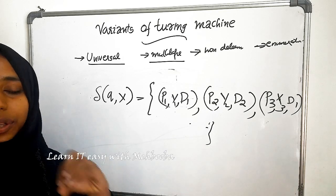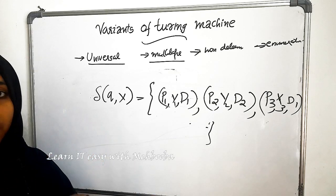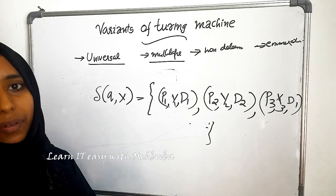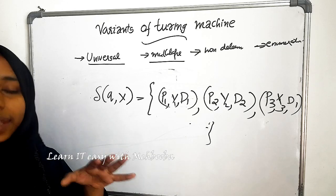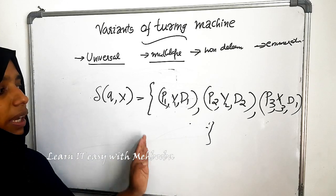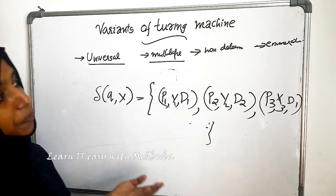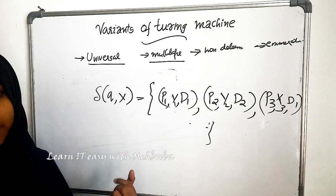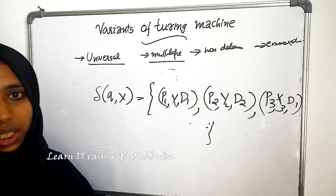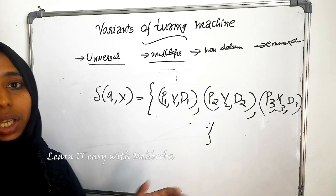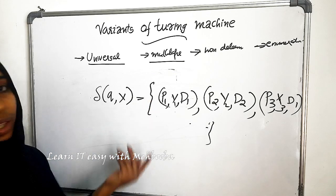Non-deterministic Turing machines and deterministic Turing machines have the same processing power, the same processing capability. That means anything that is accepted by a non-deterministic Turing machine can be accepted by a deterministic Turing machine also. Non-determinism doesn't add anything to the processing power of a Turing machine — they are equivalent.